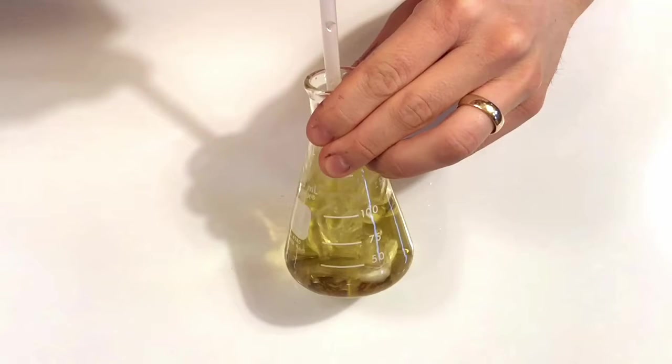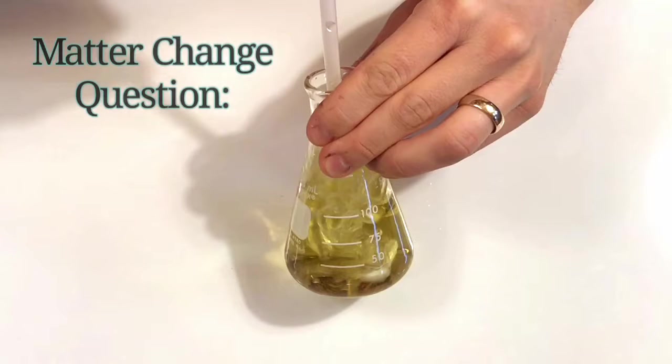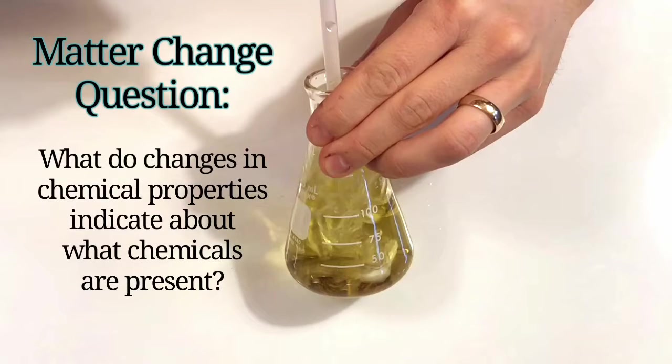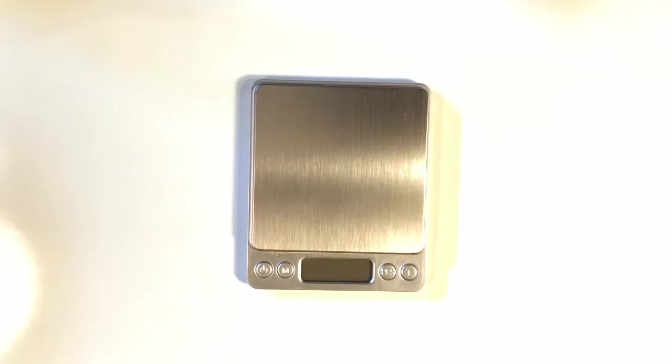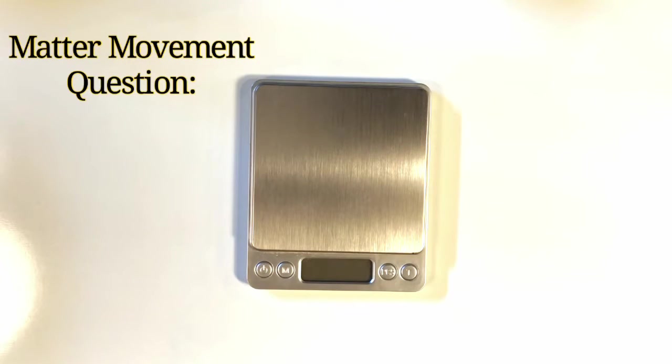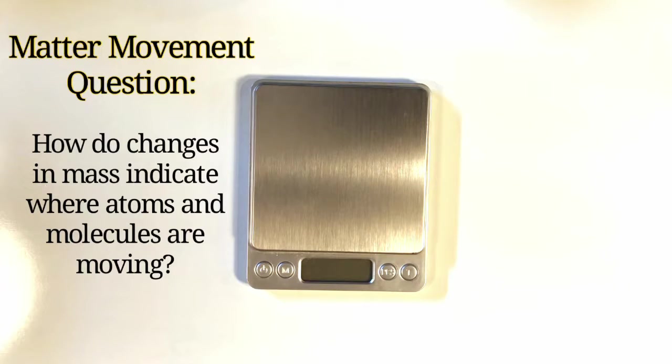We can use BTB to address what we call the matter change question. What do changes in chemical properties such as pH indicate about what chemicals are present? The other tool we have is a scale, and this can be used to precisely measure changes in mass. And we can use our scale to address what we'll call the matter movement question. How do changes in mass indicate where atoms and molecules are moving?